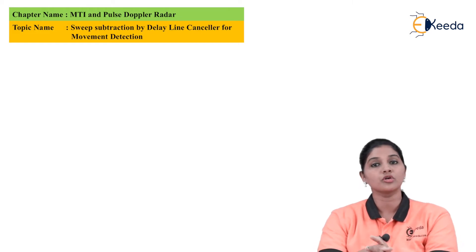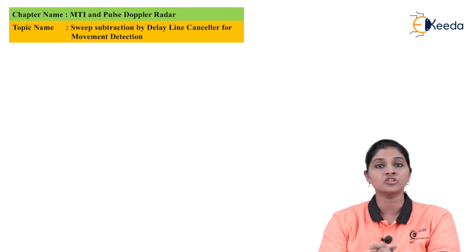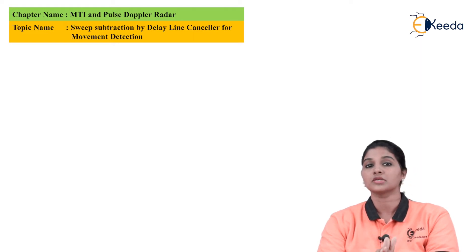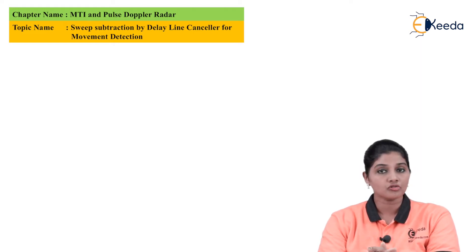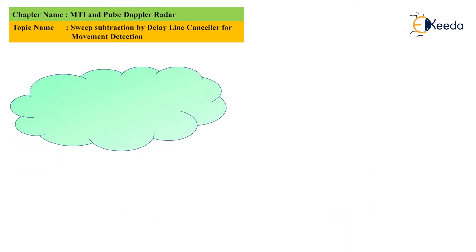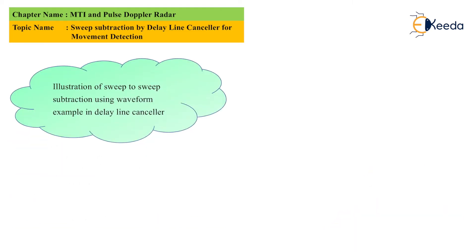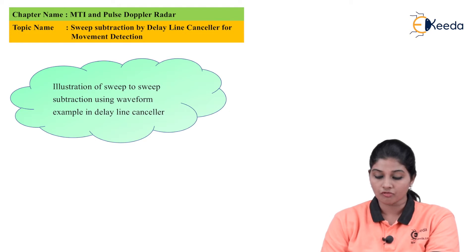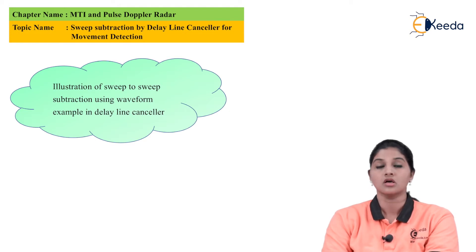In this topic we are basically going to discuss how the delay line canceller is able to remove the clutter present in the output, and we are also going to discuss the illustration of sweep-to-sweep subtraction using a waveform example in the delay line canceller.